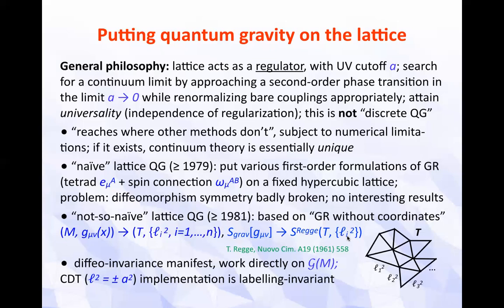Classically, one substitutes a manifold plus metric G-mu-nu by discretized data of a triangulation — specifying how triangular building blocks are glued together and what the edge lengths are — which uniquely fixes the geometry. You re-express the gravitational action as a function of these variables. The real beauty that crucially contributes to the success of this formulation is that one works directly on the space of geometries, or a regularized version of it. Moreover in CDT, one makes a special choice where essentially only two types of edge lengths exist — time-like and space-like — and sums over all ways simple building blocks can be glued together. The whole thing is diffeomorphism invariant.